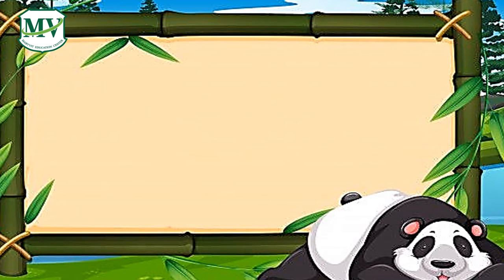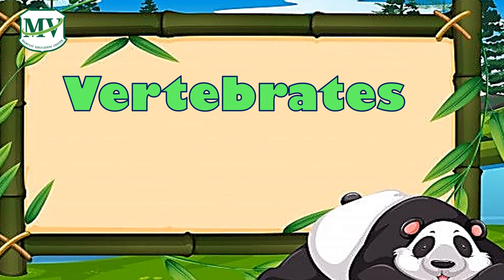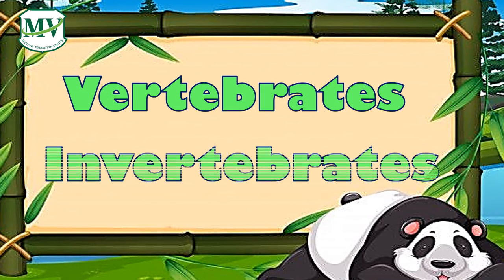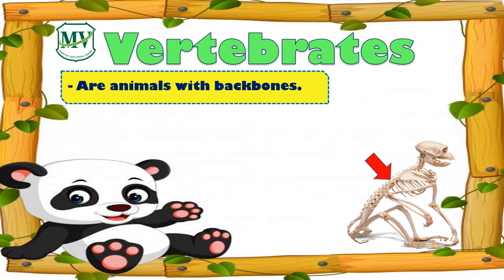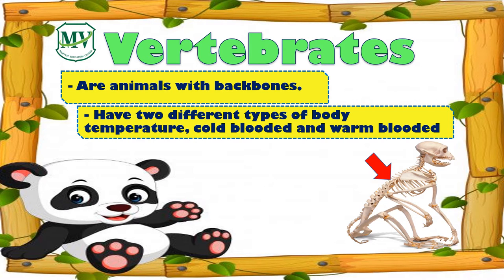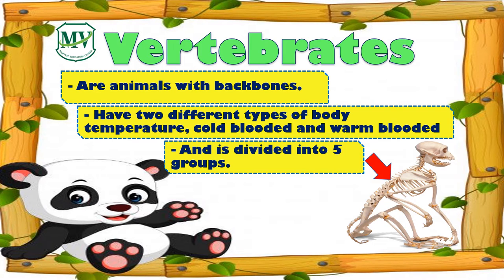There are two classifications of animals: the vertebrates and the invertebrates. Vertebrates are animals with backbones. They have two different types of body temperature: cold-blooded and warm-blooded.